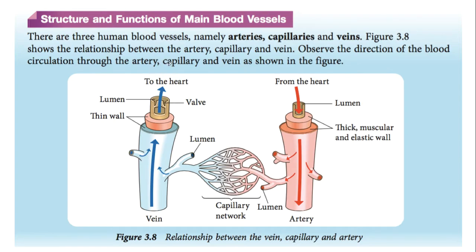Today's lesson we're going to continue with the structure and function of the main blood vessels. You need to know the main components connecting the heart and lungs with the rest of the body — we call them blood vessels, which transport blood throughout the body. In humans we have three main blood vessels: arteries, capillaries, and veins. The diagram shows how these three blood vessels connect to each other.